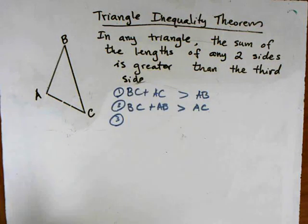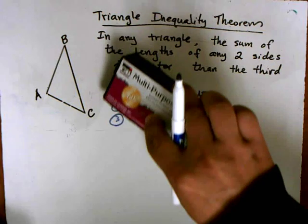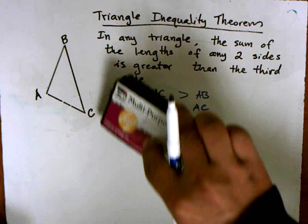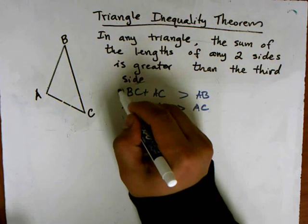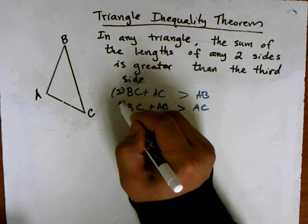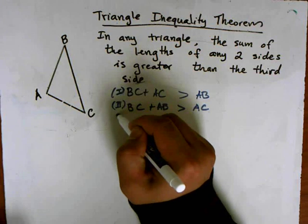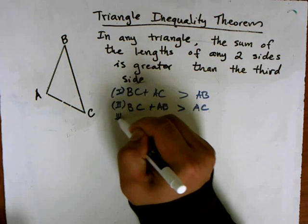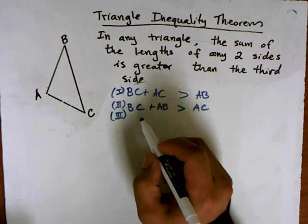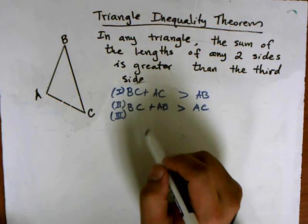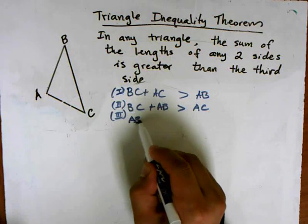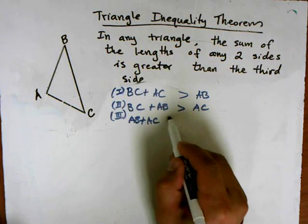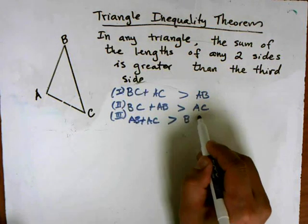I'm going to name these with Roman numerals just so we don't confuse them with the steps of the proof later on. So we'll call this statement one, this statement two. And then finally we can say that AB plus AC is greater than BC.